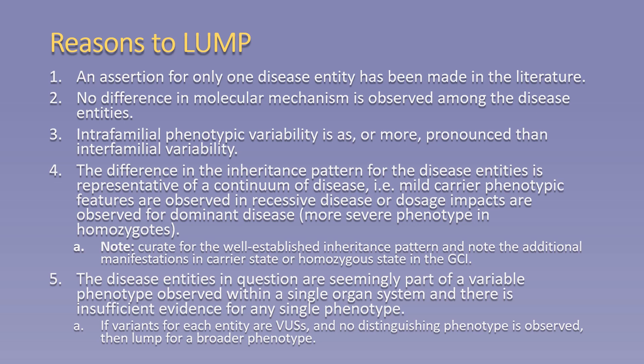Here is an outline of some reasons to lump gene disease curations. An assertion for only one disease entity has been made in the literature. No difference in molecular mechanism is observed among the disease entities asserted for a gene of interest. Intrafamilial phenotypic variability is as or more pronounced than interfamilial variability. The difference in the inheritance pattern for the disease entities is representative of a continuum of disease—for example, mild carrier phenotypic features are observed in recessive disease or dosage impacts are observed for dominant disease.